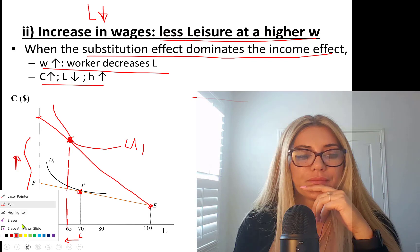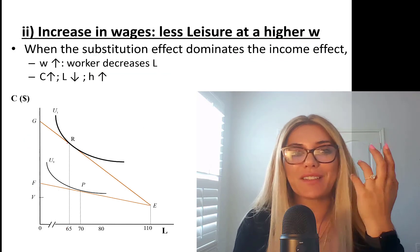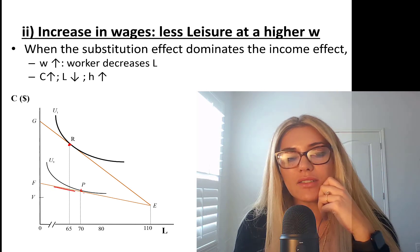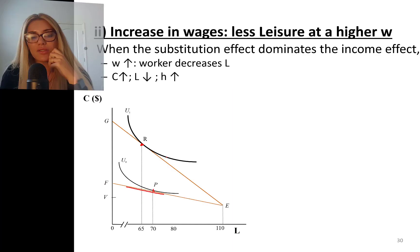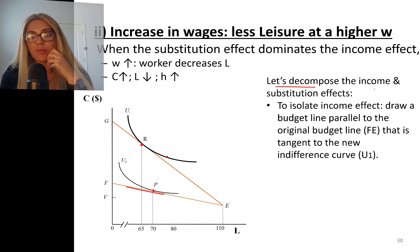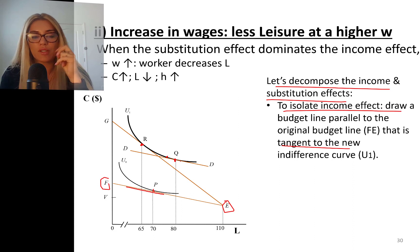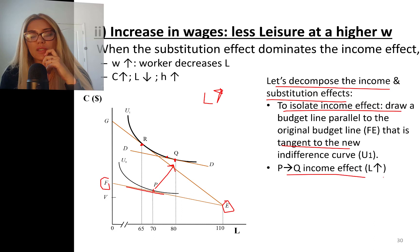It's the same way. GE is the new budget line and the new optimal point is R. To find the income effect only, you need a budget line parallel to the initial budget line FE but tangent to the new indifference curve — that's DD, the ghost budget line. P to Q is your income effect, and the income effect says to increase leisure.